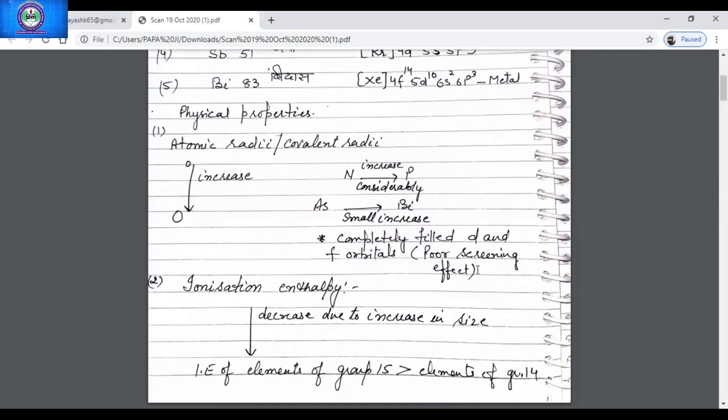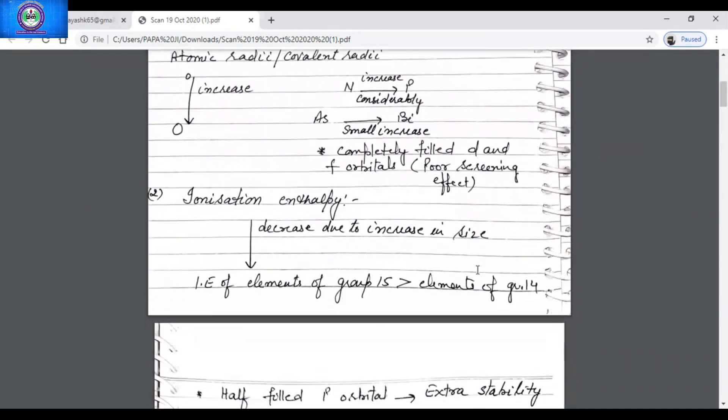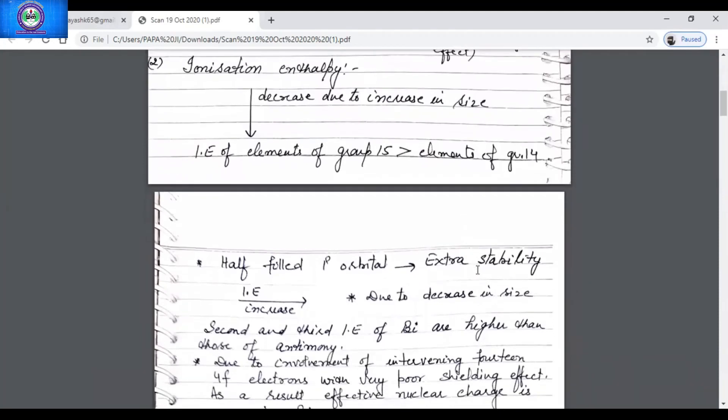Down the group, ionization enthalpy is expected to decrease because of the increase in atomic radii. The ionization enthalpy of elements of group 15 is greater than that of group 14.